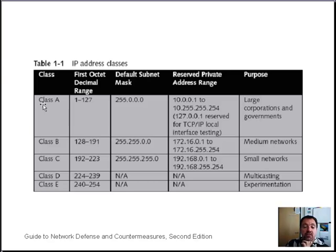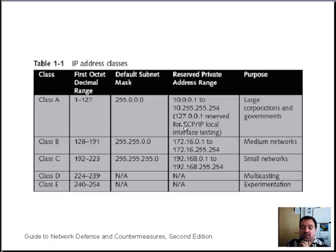IP address classes: Class A has a first octet range from 1 to 127, with a default subnet mask of 255.0.0.0. There is a private reserved address range from 10.0.0.1 through the end of that range, and 127.x.x.x is reserved for local TCP loopback interface testing. Because there are so many combinations, class A networks are reserved for large corporations and governments.